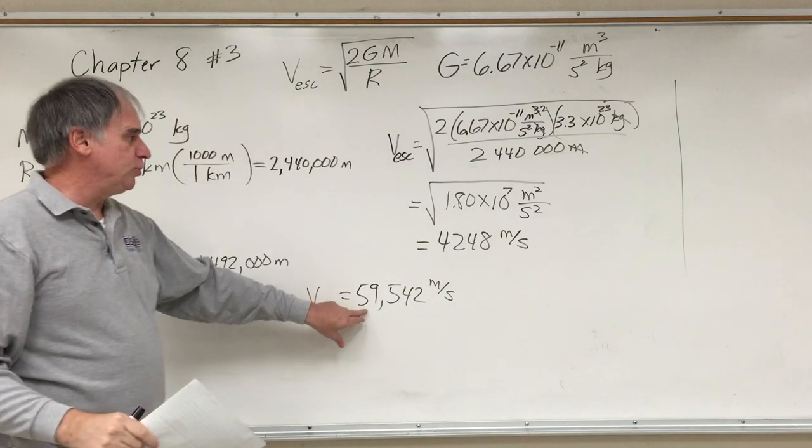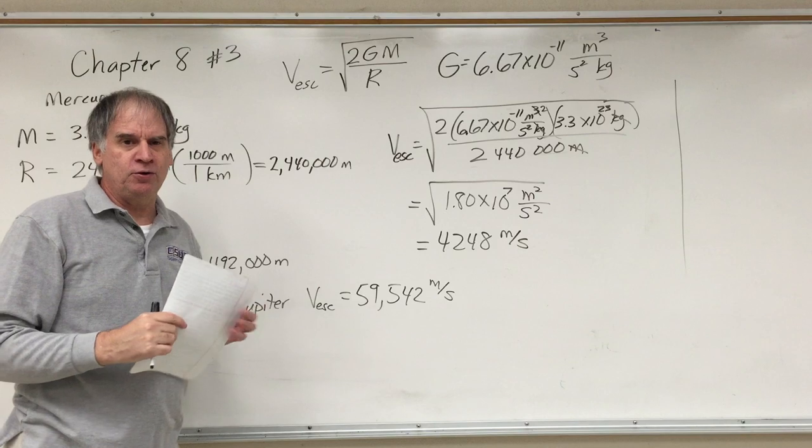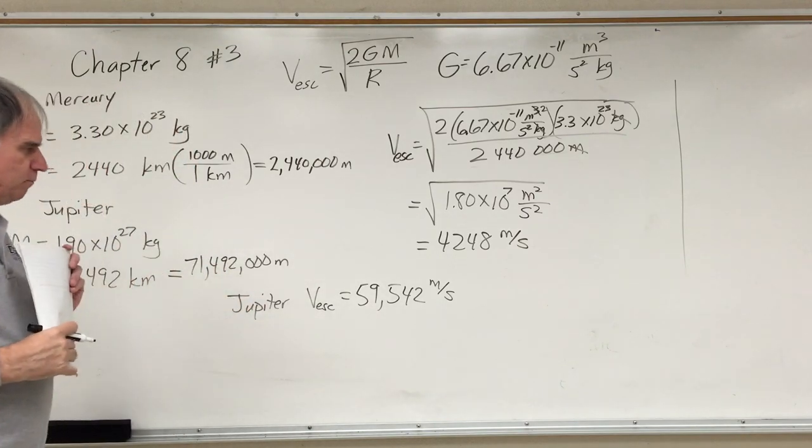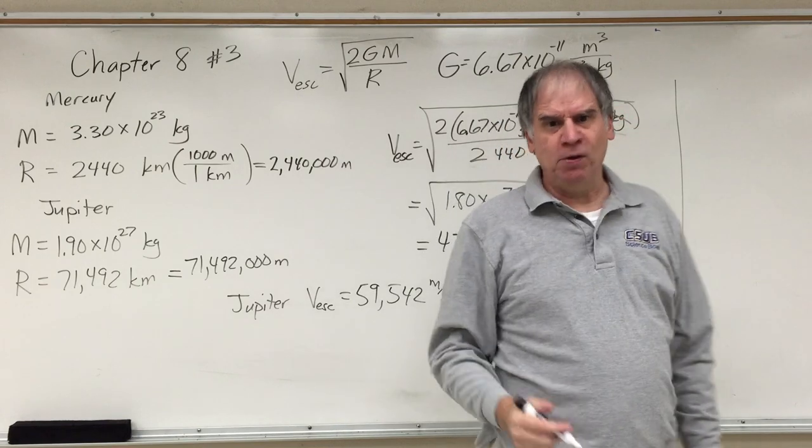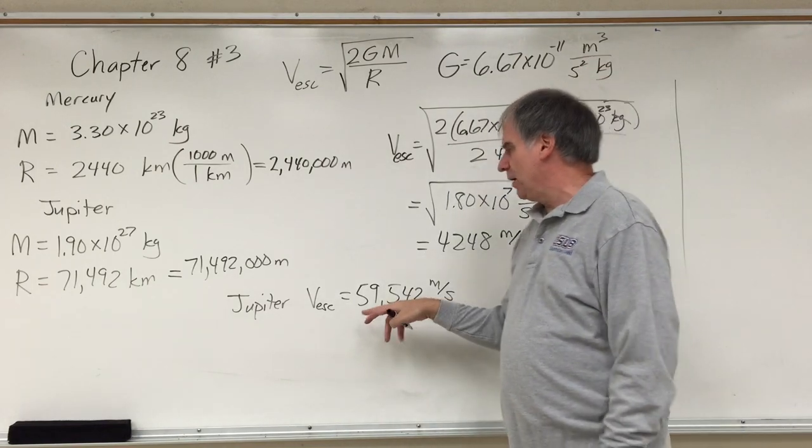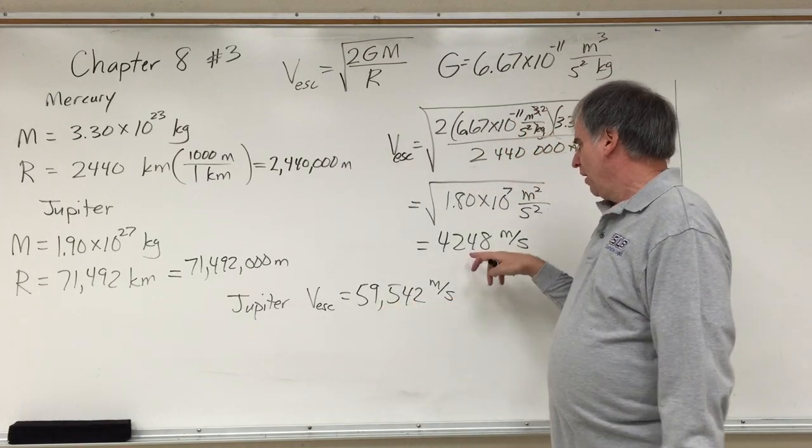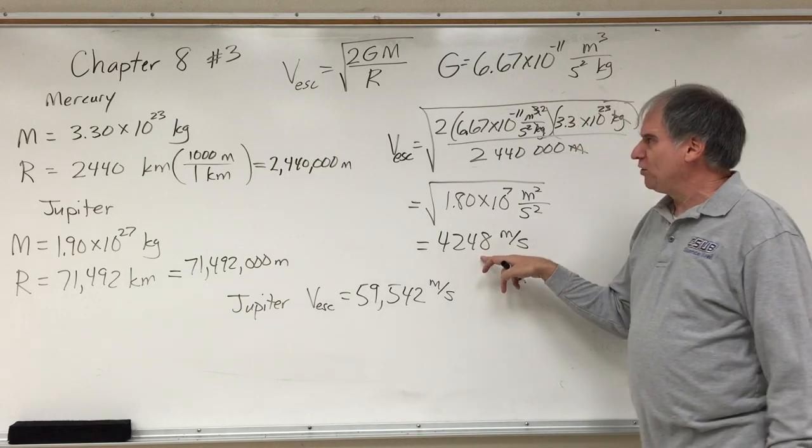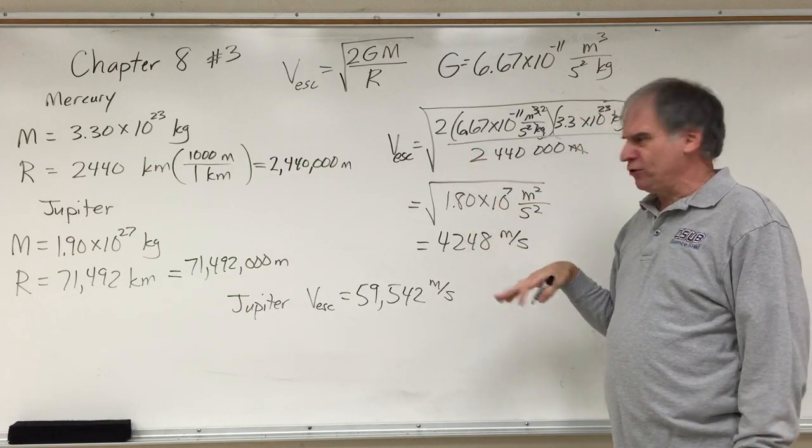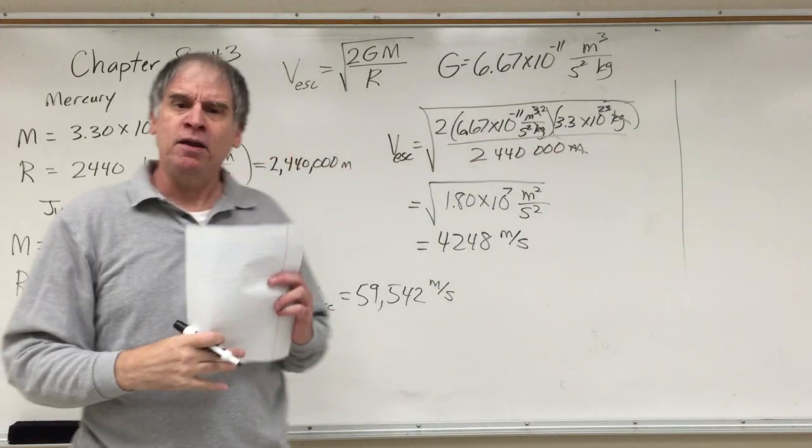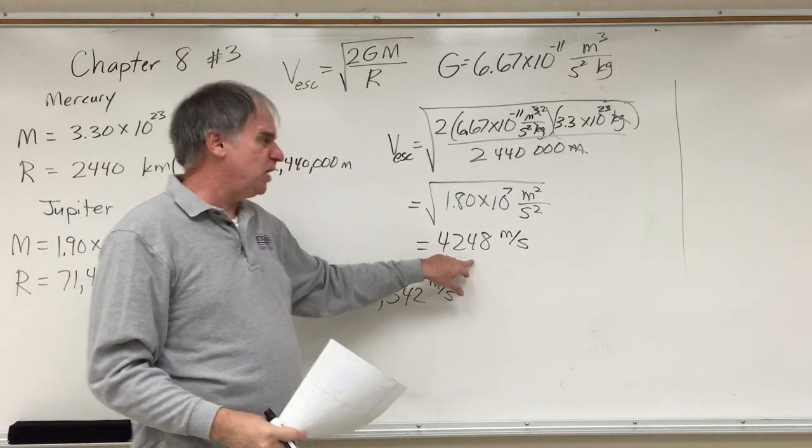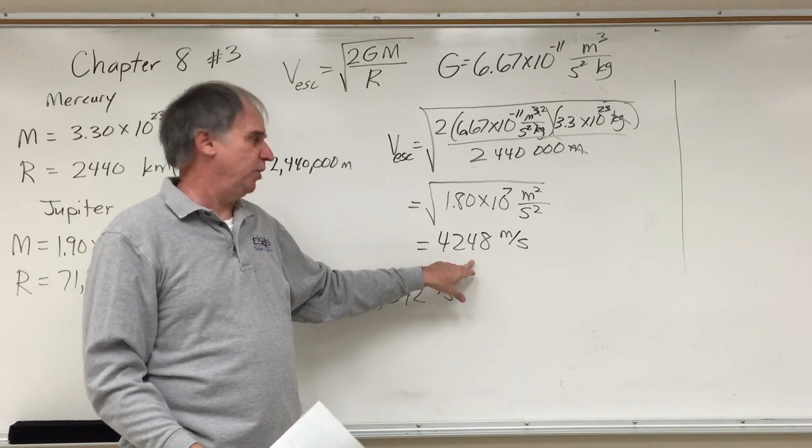A much larger escape velocity for Jupiter compared to Mercury, meaning particles have to be going a lot faster to be able to fly away from the gravity of Jupiter. This is fairly low, especially for a planet like Mercury that's close to the Sun. If there are particles in the atmosphere, the Sun would heat those particles to speeds faster than this. That's why Mercury has no atmosphere.